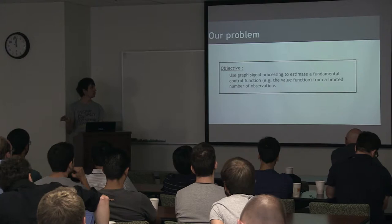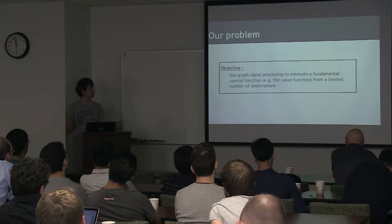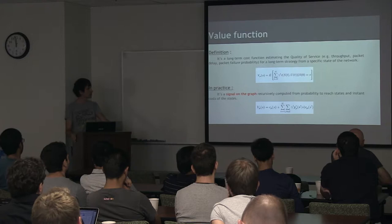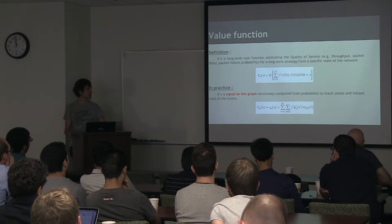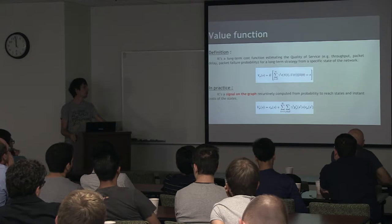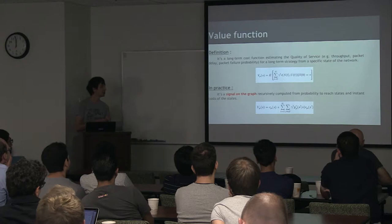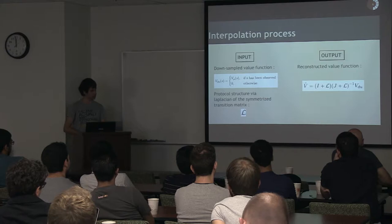Our problem is to use this new model and graph signal processing to estimate a fundamental control function, we call the value function, from a limited number of observations. What is this value function? It's a function that estimates the cost of a long-term strategy from a given node of our graph. It can use several estimators like the throughput or the packet delay or whatever. But what is important is that this function is a signal on our graph, meaning it's a function defined on the nodes of our graph.